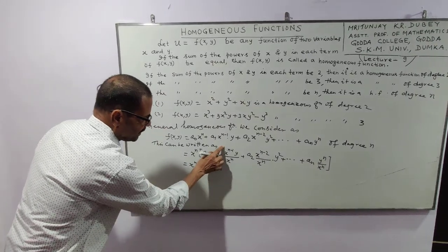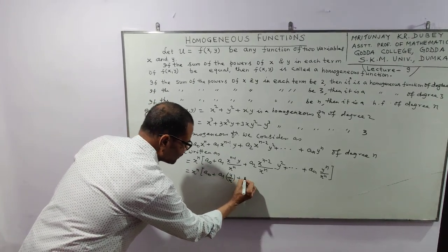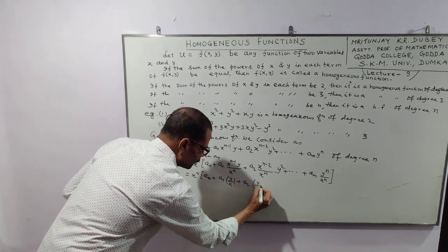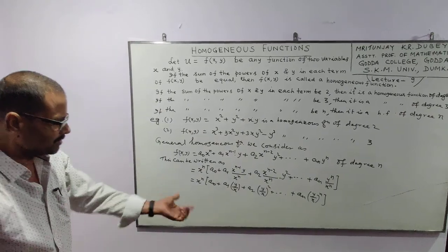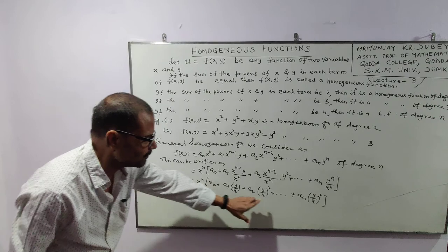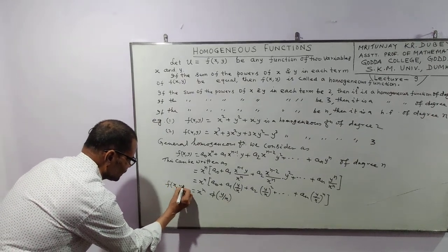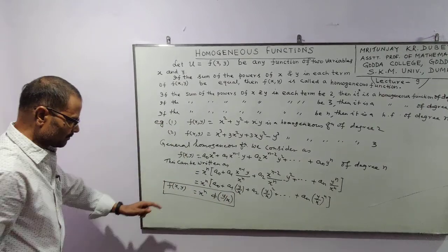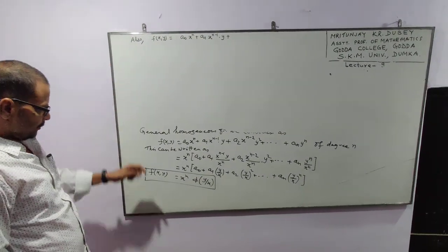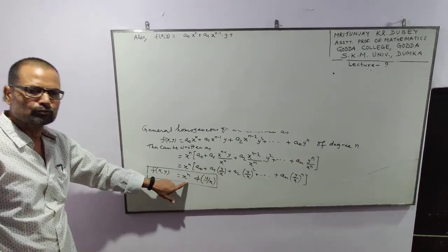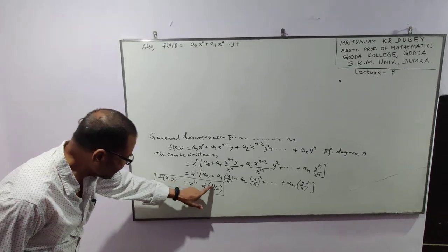Taking xⁿ common, we get a₀ plus a₁·(y/x) plus a₂·(y/x)² and so on, finally a term (y/x)ⁿ. So we see that in each term there is a function of y/x. So this can be written as a function of y/x. A general homogeneous function of degree n can be written in this form: f(x,y) is equal to xⁿ times φ(y/x).